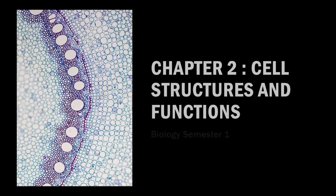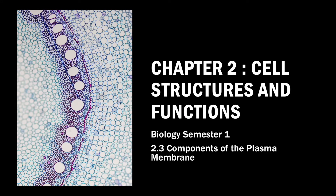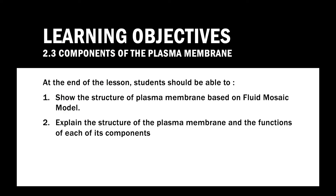Welcome back to the discussion of Chapter 2, Cell Structures and Functions, but this time we will focus on subtopic 2.3, Components of the Plasma Membrane. These are the learning objectives of this subtopic. At the end of the lesson, students should be able to show the structure of the plasma membrane based on the fluid mosaic model, and explain the structure of the plasma membrane and the functions of each of its components.